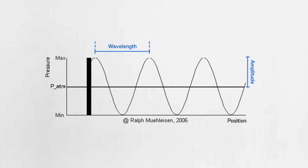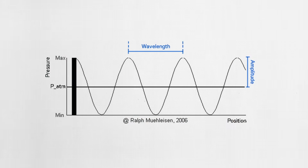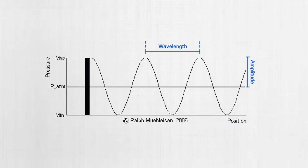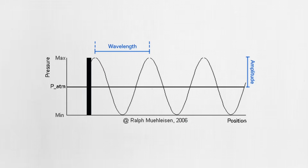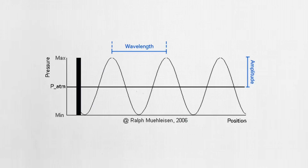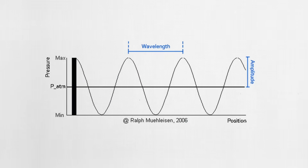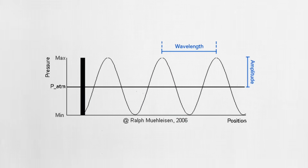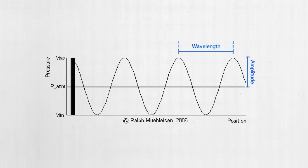You've almost certainly seen this type of graph before, which represents the oscillations of a sound wave over time. But for those just starting to understand acoustics, this representation can be a bit confusing — that's because sound waves are longitudinal, while the waveform on this graph appears to be transverse. What does this mean? I'm glad you asked.